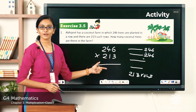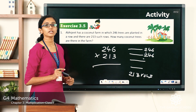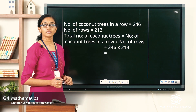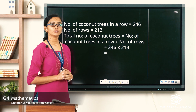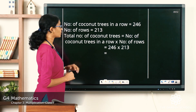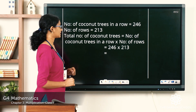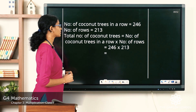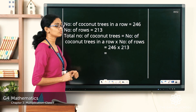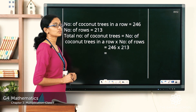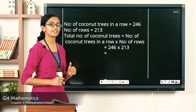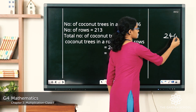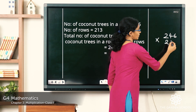So the product will give you the total number of coconut trees. Let us write the steps. The number of coconut trees in a row is 246, the number of rows is 213, and the total number of coconut trees equals the number of coconut trees in a row times the number of rows. That is equal to 246 × 213.